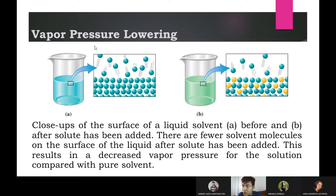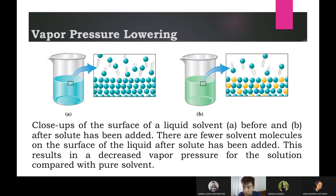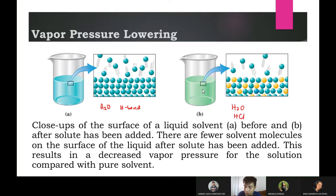Let's talk about vapor pressure lowering. In container A, you have solvent only. In container B, you have solute and a solvent — therefore you have a solution. Solvent particles, for example water, have intermolecular forces of attraction like hydrogen bonding. Although molecules are held together by hydrogen bonds, some of them may still escape to the gas phase, which is why water evaporates.